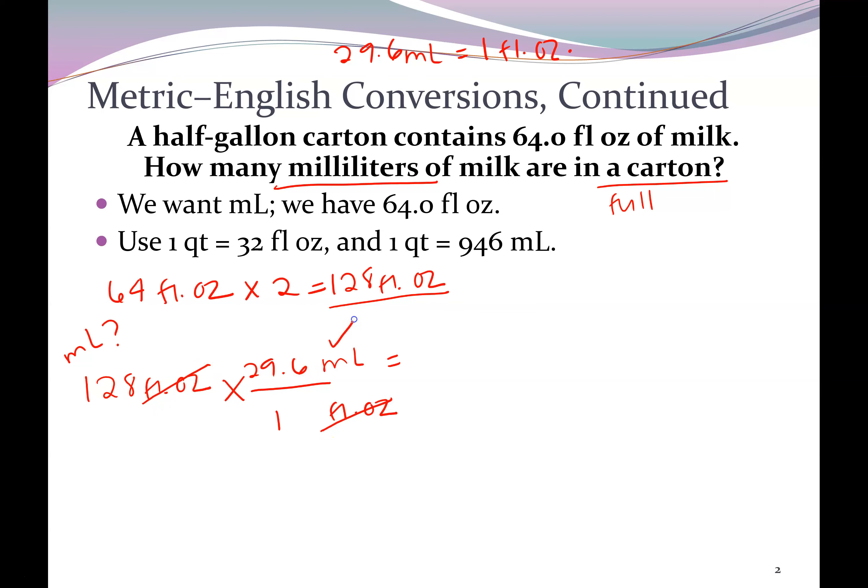Fluid ounces cancels, and we're left in milliliters. So in our calculator, we multiply 128 times 29.6, and that gives us 3,788.80 milliliters. That's it, and let me know if you have any questions about this problem.